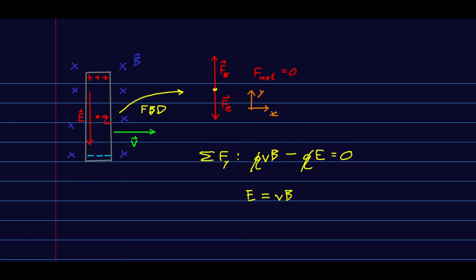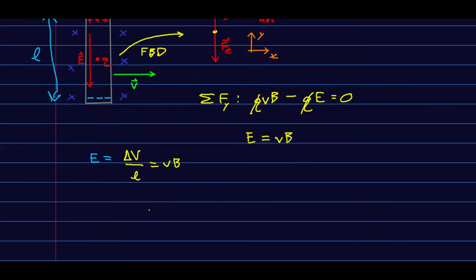And we get that the E field just ends up being equal to V times B. Well now, because we know that the length of the rod is some L, we can say that the E is some voltage difference across the rod over L. Delta V over L, and that equals VB. And so that tells us we are going to see a voltage between the two ends of the rod of V, B, L.